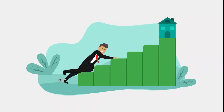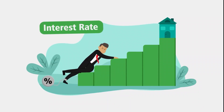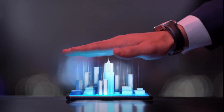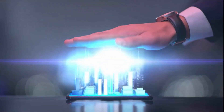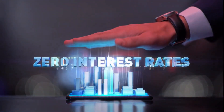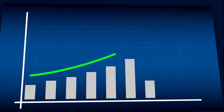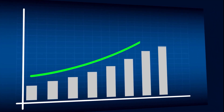Compound interest is the interest earned not only on the initial amount of money invested — the principal — but also on the interest that has been added to the principal over time. In other words, it's the process of earning interest on interest, which can lead to exponential growth of your investment.